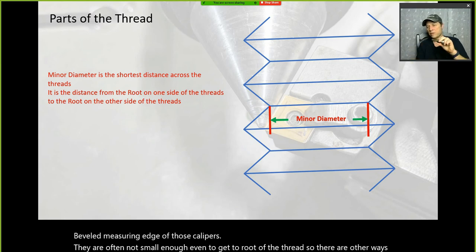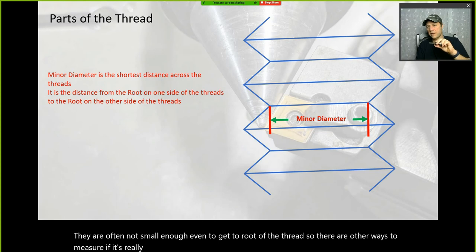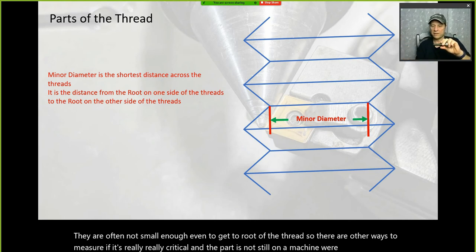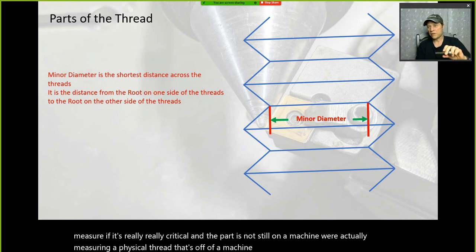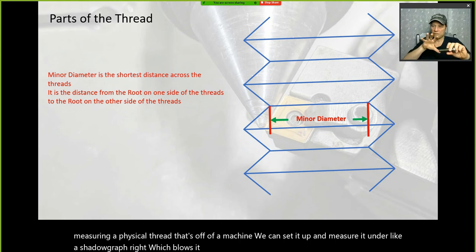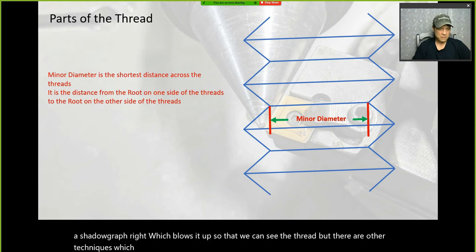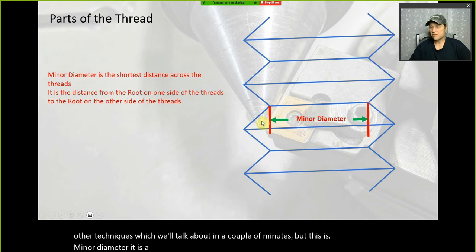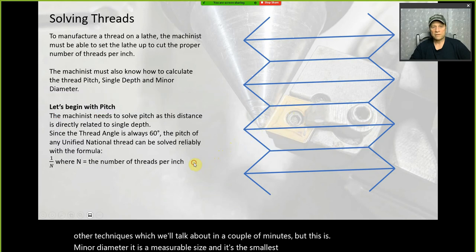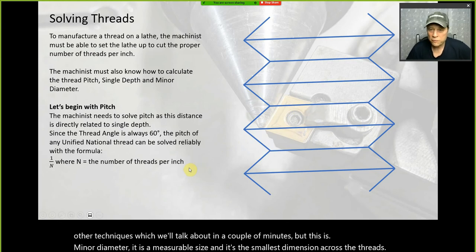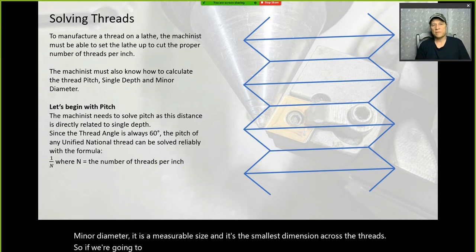If it's really critical and the part is off the machine, we can set it up and measure it under a shadow graph, which blows it up so we can see the thread. But minor diameter is a measurable size, and it's the smallest dimension across the threads.